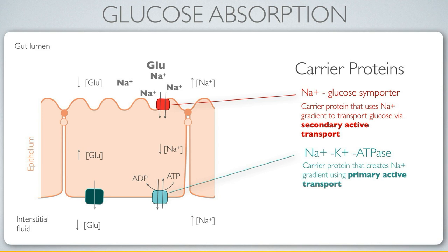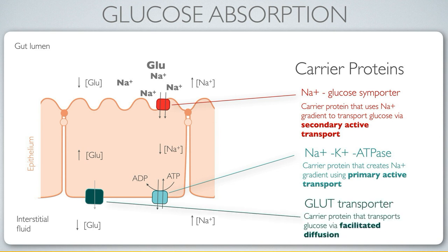All we need on the basal membrane is the ability to differentially allow glucose to move across that membrane, and that's facilitated by something called a GLUT transporter — another carrier protein that is fueled by facilitated diffusion, just allowing molecules to move down their concentration gradient.